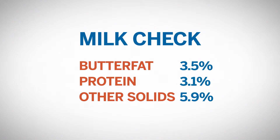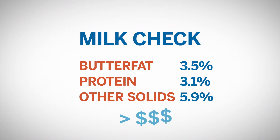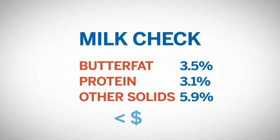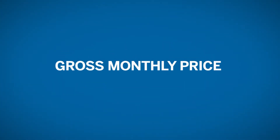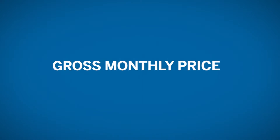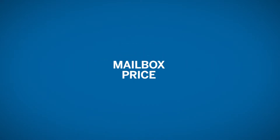The standardized levels are 3.5% butterfat, 3.1% protein, and 5.9% other solids. If the milk that the producer shipped contains higher levels of these components, the producer's milk check will reflect a premium. If his milk contains lower levels, then he will receive less. The gross monthly price that the producer receives for his milk is known as the mailbox price.